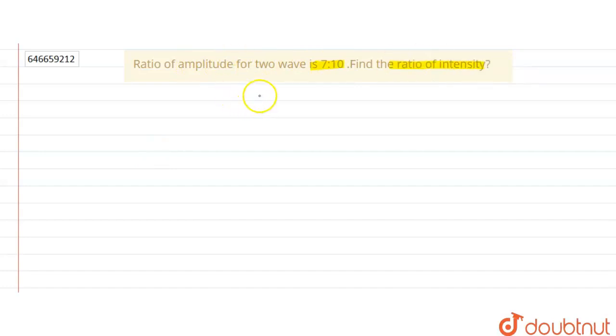So first of all, we will write the given data. In the question, it is given that the ratio of amplitude is 7 by 10. It means that A1 by A2 is given in the question, which is equal to 7 by 10, and we have to find the ratio of intensity.